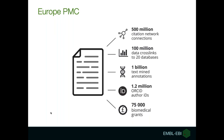On top of this, there are other data available in Europe PMC that go along with the article. Europe PMC provides citation network connections and data cross-links, which are citations to biological data hosted in other databases. There are also text mining annotations available, information about author IDs called ORCIDs, and also biomedical grants.